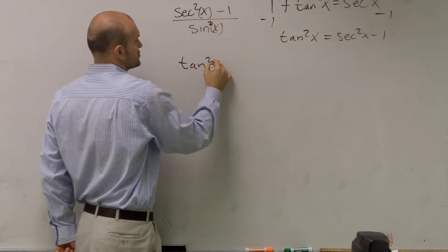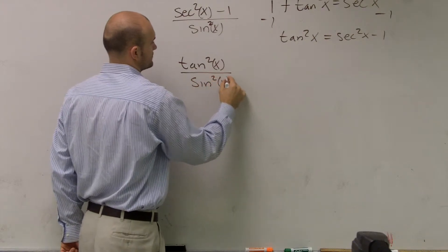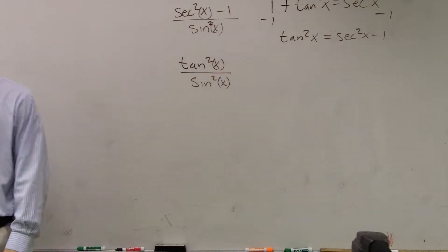I can now transfer this to tangent. So I can take tangent squared of x over sine squared of x. Everybody following me so far? Yes. OK.